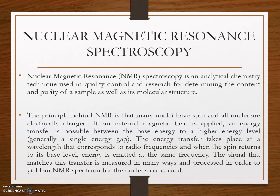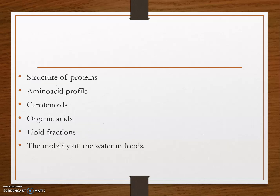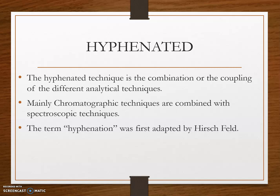NMR can quantitatively analyze mixtures containing unknown compounds and is the most powerful technique for determining the structure of organic compounds. With NMR we can identify and quantify metabolites in food. This technique can be applied for analyzing protein structure, amino acid profiling, carotenoids, organic acids, lipid fractions, and the mobility of water in foods.